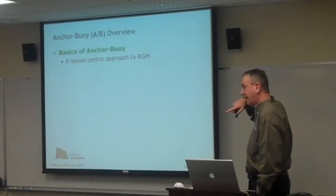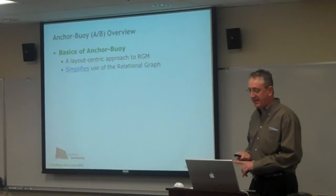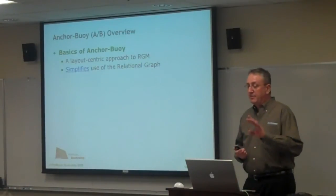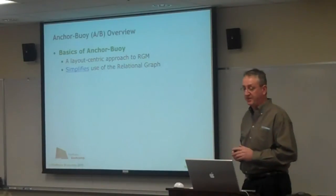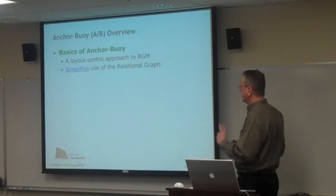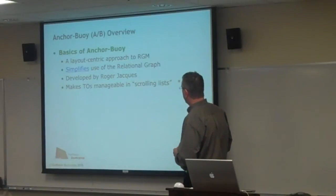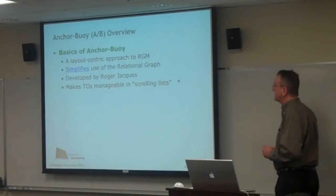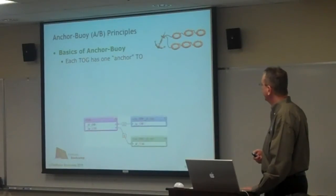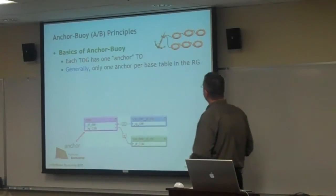The basics of Anchor Buoy is that it is a layout-centric approach to working with the graph — keeping in mind as you build the graph how you're going to use it in the context of specific layouts. It simplifies things partly by reducing bi-directionality using unidirectional relationships, and also through naming conventions. It pushes for one direction outward, generally from left to right. Table occurrences are manageable in scrolling lists because it provides relevance to relevant data. Each table occurrence group has one anchor, generally on the left.